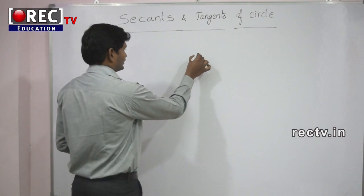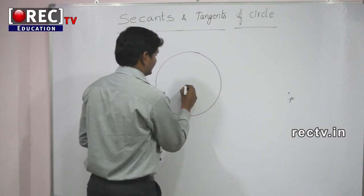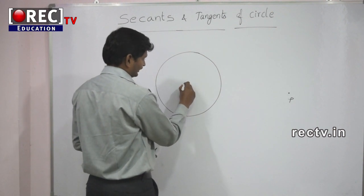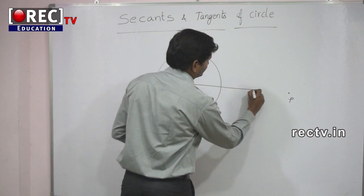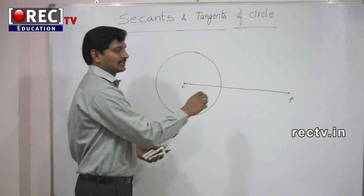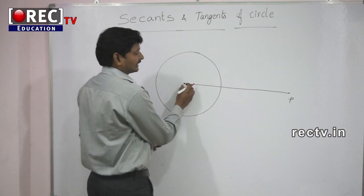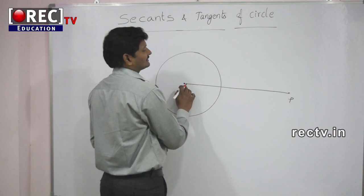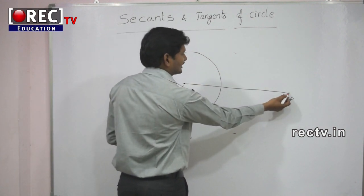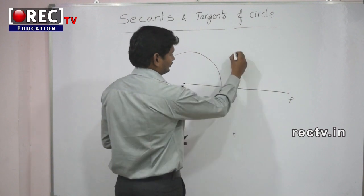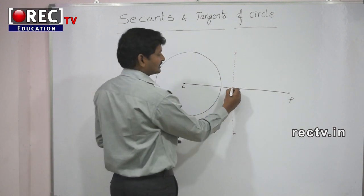Construction of tangents to a circle from an external point P. The point P is some distance away from center C. First, join the two points C and P. Then construct the perpendicular bisector of CP — find the midpoint by taking a radius more than half of CP, taking C as center, drawing two arcs above and below, then taking P as center with the same radius to intersect those arcs.